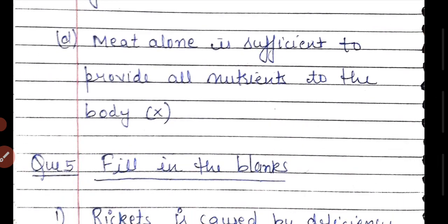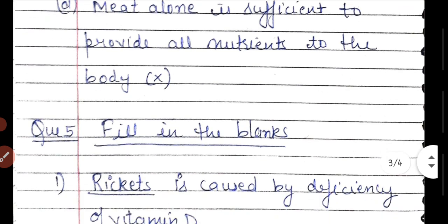The next statement: meat alone is sufficient to provide all nutrients to the body. Meat alone cannot provide all the nutrients to our body, because meat has maximum protein. But other nutrients like carbohydrates, fats, and other nutrients which are required for our body will not be obtained from meat alone. So this statement is false — meat will not provide all nutrients.